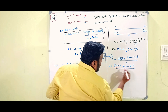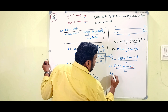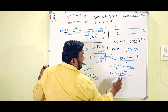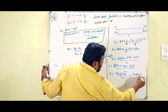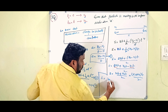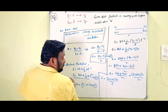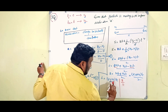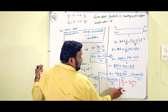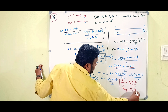Expanding the numerator: 2v1·T + v2·T − v1·T = v1·T + v2·T. So s = (v1·T + v2·T) / 2. Factoring out T: s = (v1 + v2)/2 · T. Dividing both sides by T: s/T = (v1 + v2)/2. Since s/T is total distance divided by total time, this equals the average velocity.